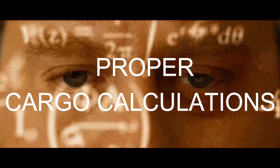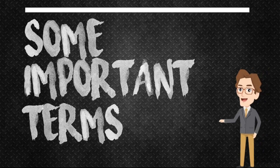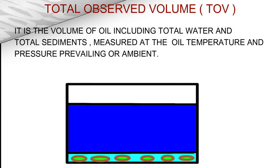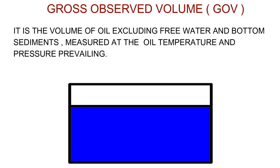To avoid this, we need proper cargo calculations. Key terms: Total Observed Volume (TOV) is the volume of oil including total water and total sediments, measured at the oil temperature and pressure prevailing. Gross Observed Volume (GOV) is the volume of oil excluding free water and bottom sediments, measured at the oil temperature and pressure prevailing.